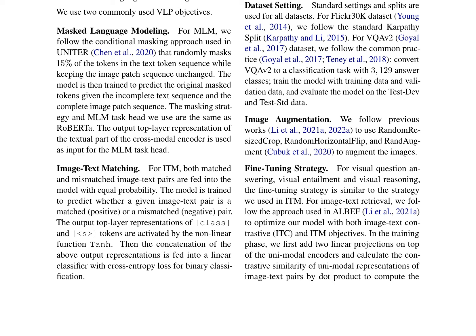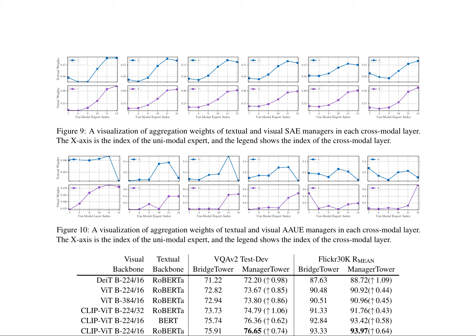The authors use four public image-caption datasets for pre-training, including Conceptual Captions, SBU Captions, MSCOCO Captions, and Visual Genome. The total number of unique images and image-caption pairs in the combined training data is 4M and 9M, respectively. The fine-tuning strategy for downstream tasks involves standard settings; for Flickr 30K they follow the standard Karpathy split, while for VQA V2 they convert it to a classification task with 3129 answer classes. Image augmentation techniques such as random resized crop, random horizontal flip, and RandAugment are also used.